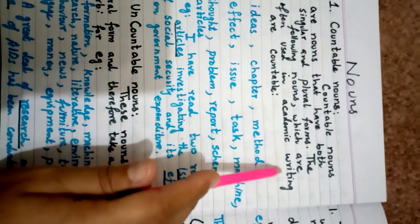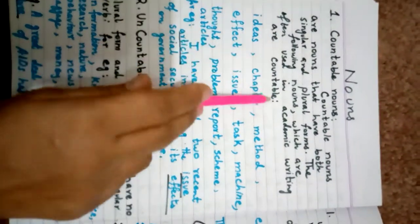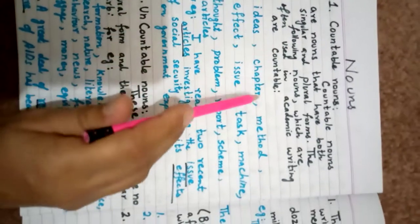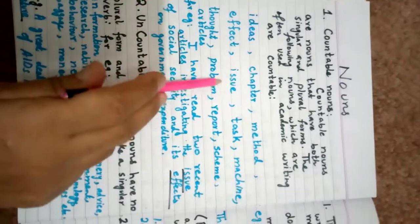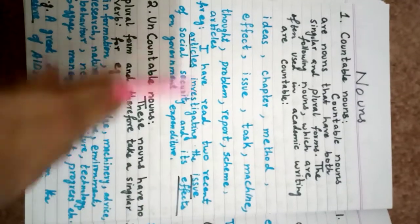For example, the following nouns which are often used in academic writing are countable: Idea/Ideas, Chapter/Chapters, Method/Methods, Effect/Effects, Issue/Issues. They can be made in plural form. This is an example.